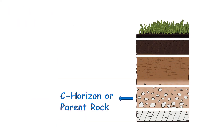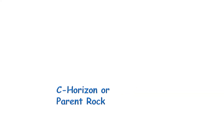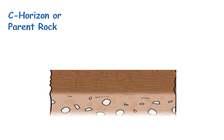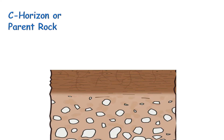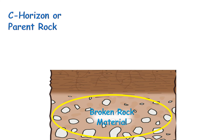C horizon, or parent rock, is present below the subsoil. It consists of weathered or broken rock material.